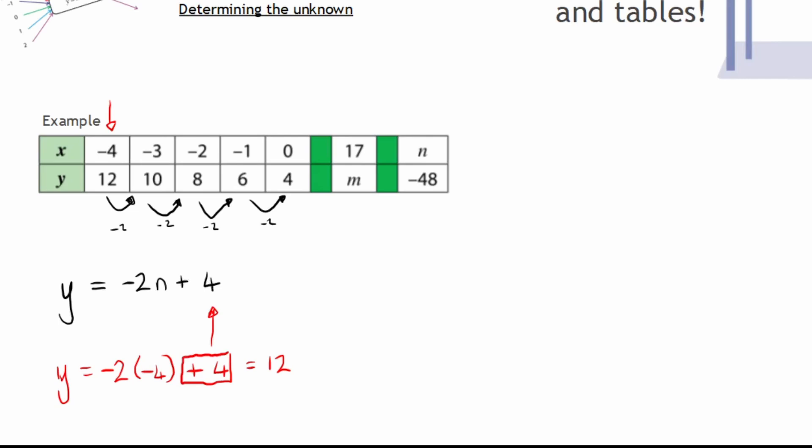Now I can use this function to determine any other missing values such as my m here and my n there. So let us look then at our first. When I calculate my m value that will be my output. So my output when my input is 17. So I have my function: y equals negative 2n plus 4. And what I'm looking for is the specific value of y when my input is 17. So I will simply say negative 2 multiplied by 17 add 4.